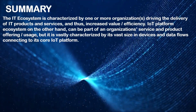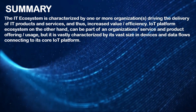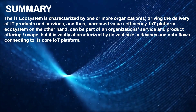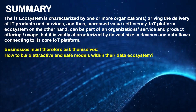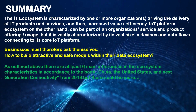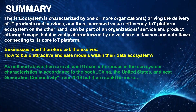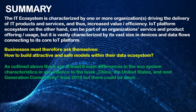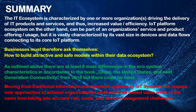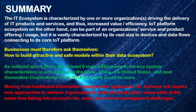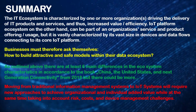The IT ecosystem is characterized by one organization or one network of organizations driving the delivery of IT products and services. The IoT platform ecosystem, on the other hand, can be part of an organization's services and product offering, but is vastly characterized by the vast size in devices and data flows connecting to its core platform. Businesses must therefore ask themselves how to build attractive and safe models within their own data ecosystem. As outlined, in accordance with the book 'China, the United States and Next Generation Connectivity,' I have outlined six main differences. Moving from traditional information management systems to IoT systems requires new approaches to achieving organizational and individual added value, while taking into account risks, costs and device management challenges.